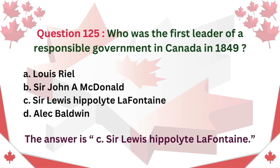Question 125: Who was the first leader of a responsible government in Canada in 1849? A. Louis Riel. B. Sir John A. Macdonald. C. Sir Louis Hippolyte LaFontaine. D. Alec Baldwin. The answer is C: Sir Louis Hippolyte LaFontaine.